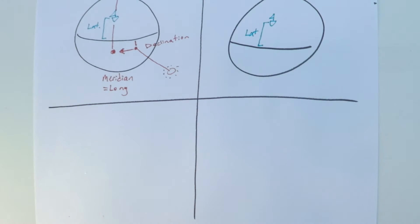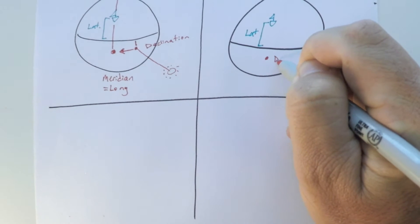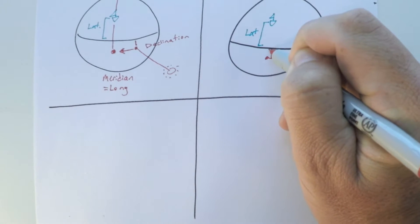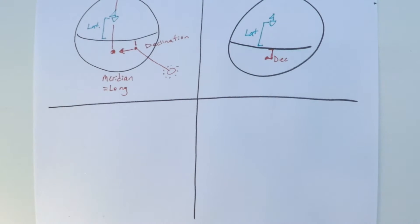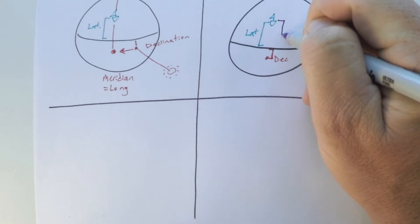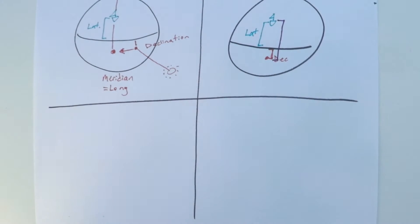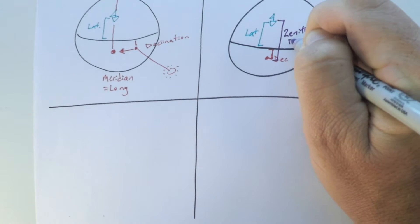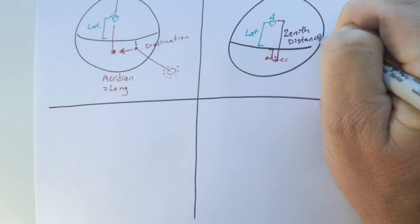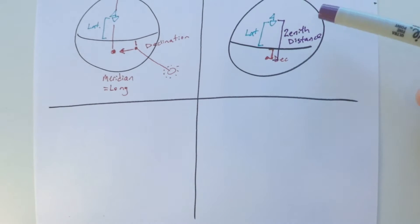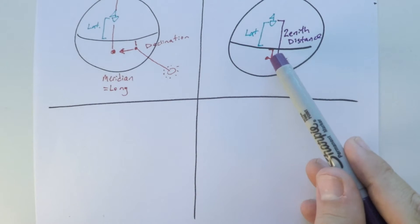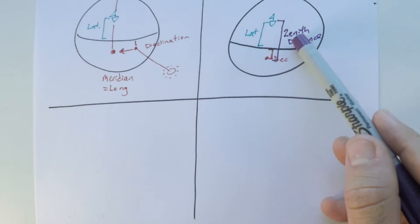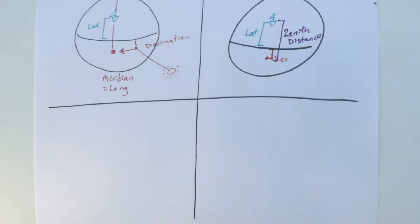If that's our latitude and this is the declination of the Sun, if we can just measure something to relate these two things mathematically, we can calculate our latitude. We can do that by measuring something called zenith distance. So if we can obtain zenith distance, we can look up the declination of the Sun and use a mathematical relationship to find our latitude at meridian passage once per day.